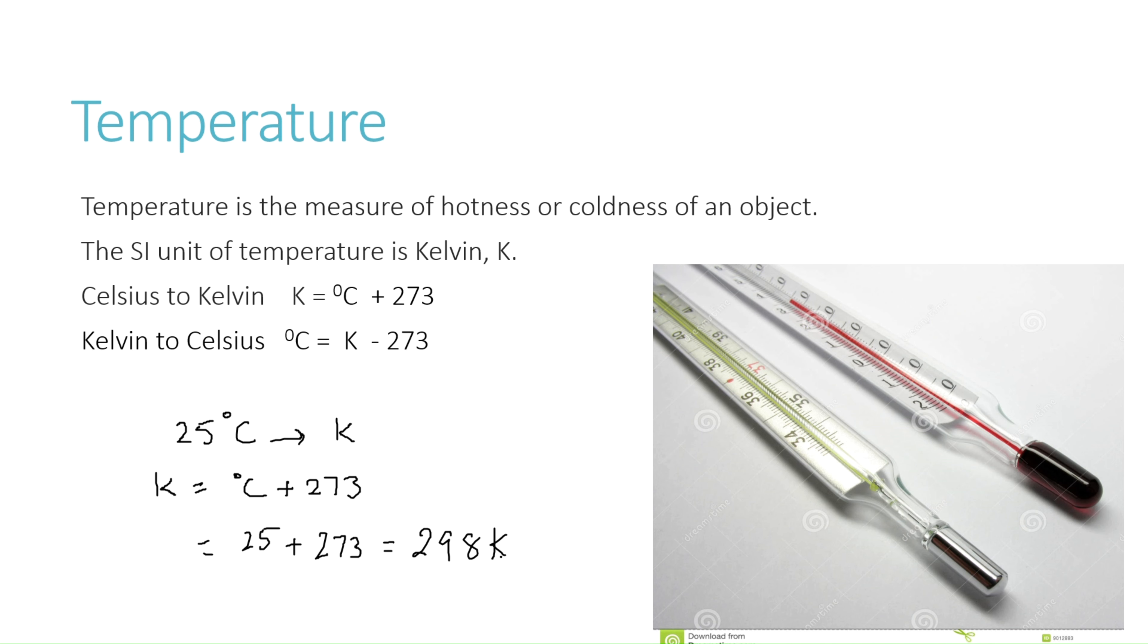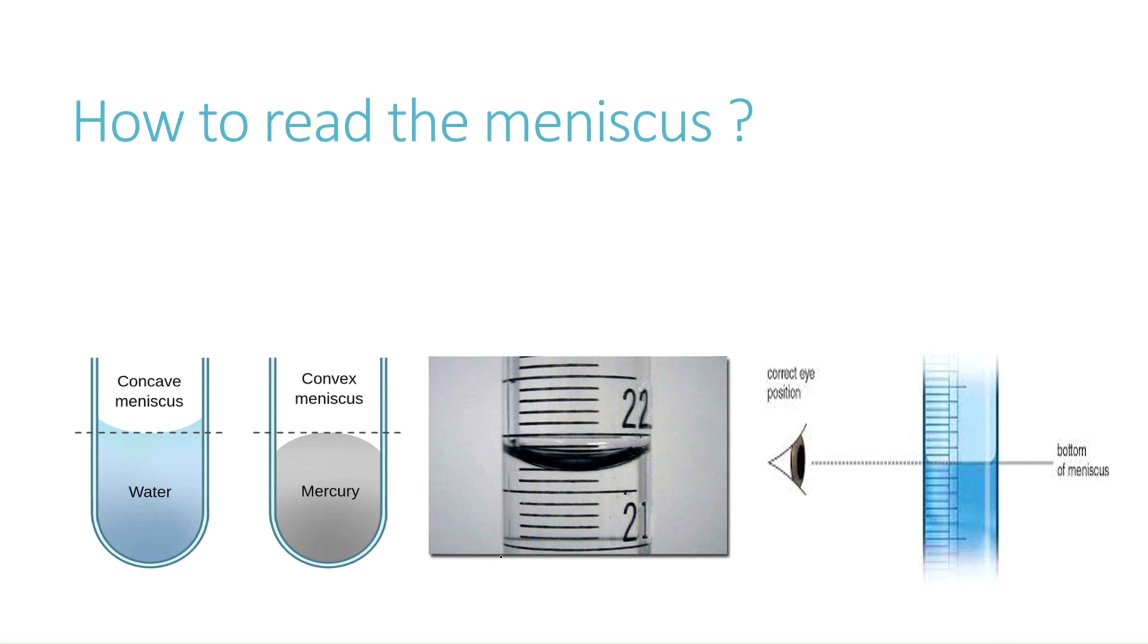The apparatus which is used to measure temperature is thermometer. We have two kinds of thermometers: an alcohol thermometer and a mercury thermometer. Thermometers give you the temperature, but when you have to read the temperature on the thermometer, it should be vertical and not slanted, and your eyes should be at the level of the meniscus. Now what is meniscus and how to read meniscus?